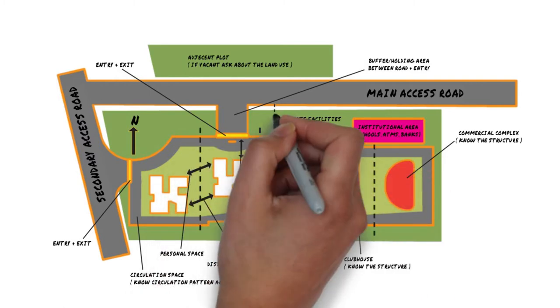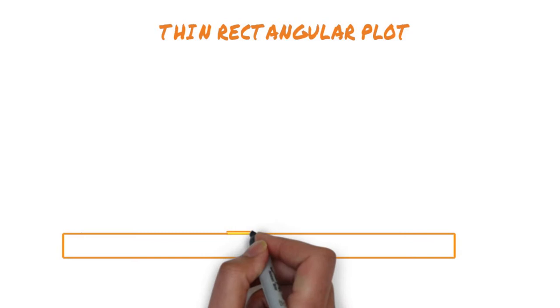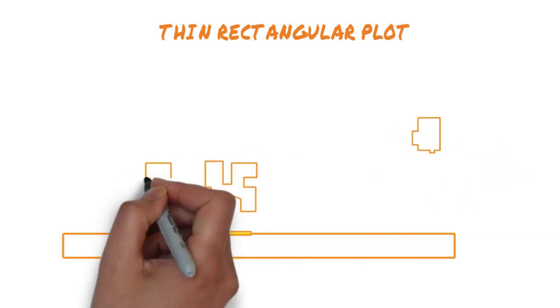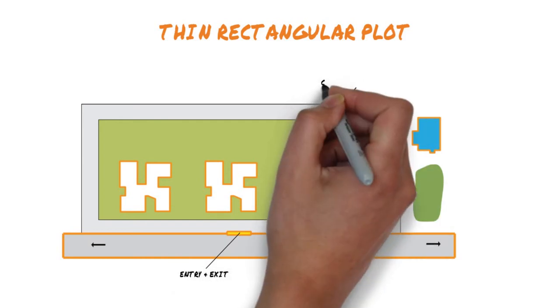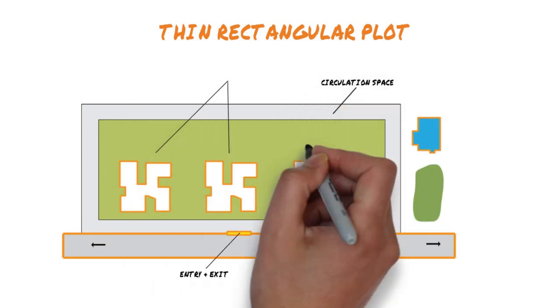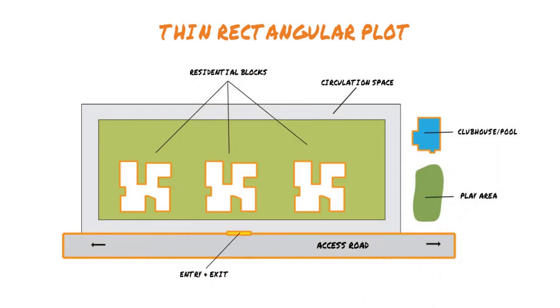Housing projects come in all shapes and sizes, and so do their master plans. You have thin rectangular plots. This is a very basic layout design. Buildings are usually placed side by side with all residential units grouped together. There are limited entry and exit points, and vehicular traffic moves along the periphery. The common issues with this sort of design are limited views and less space between houses and buildings.